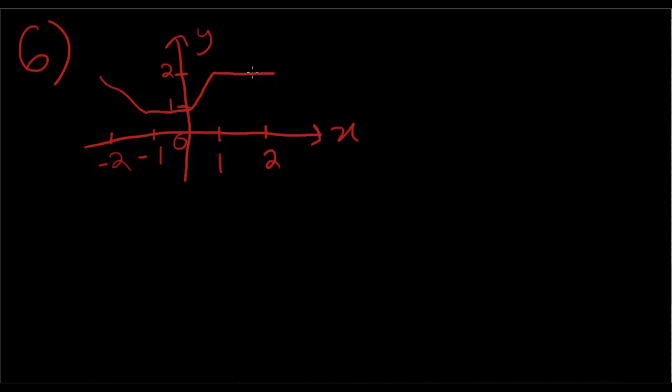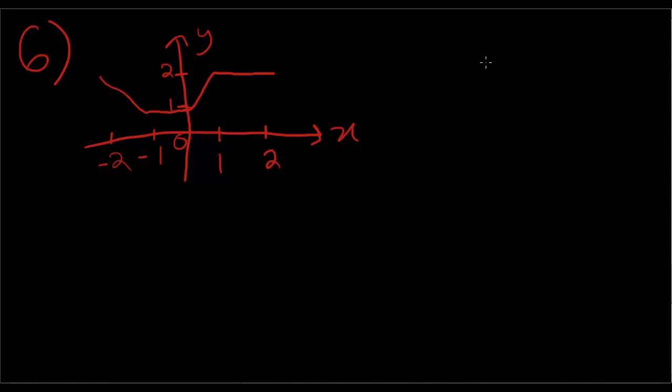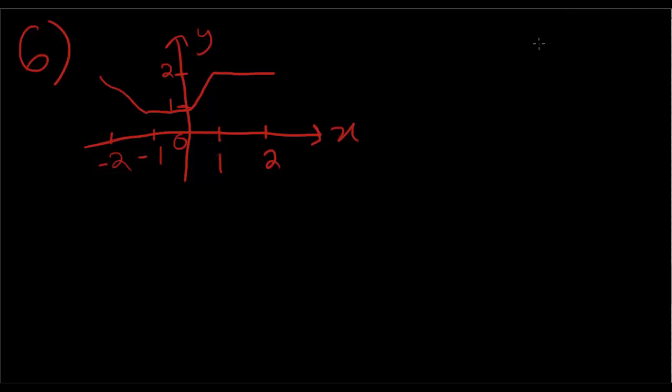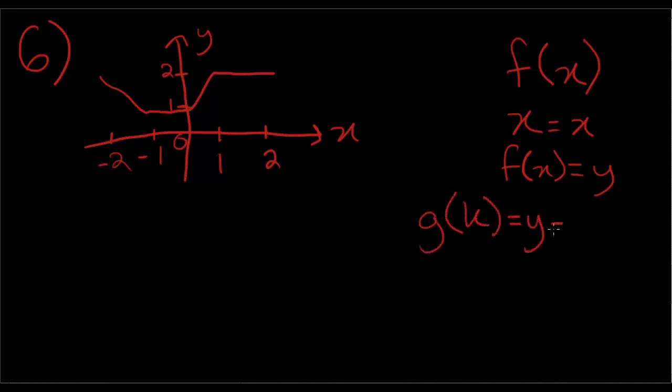So the graph of y equals g of x is shown above. If g of k is equal to 1, which of the following is a possible value of k? So once again, if you remember what a function is, in f of x, x is the x value, and f of x is the y value. So in the case of g of k, g of k is equal to the y value, which is equal to 1.